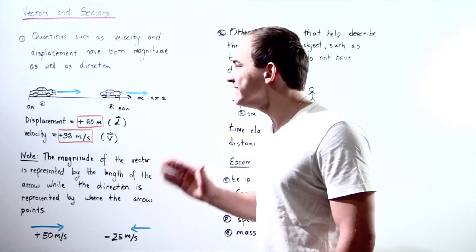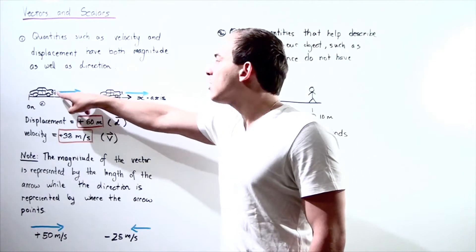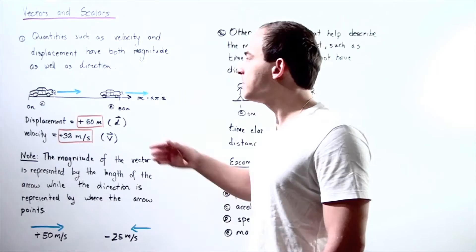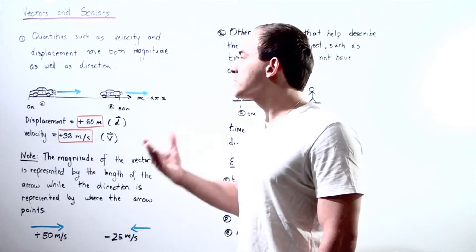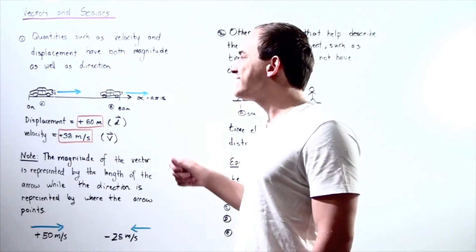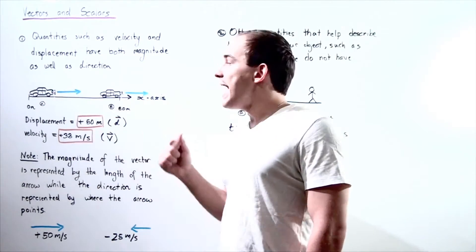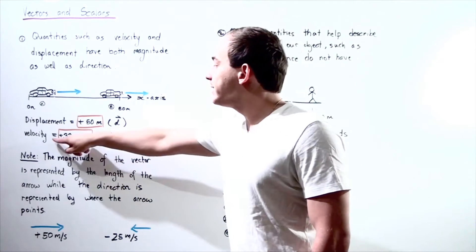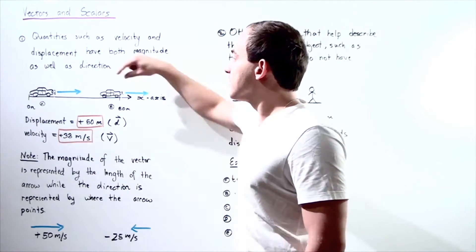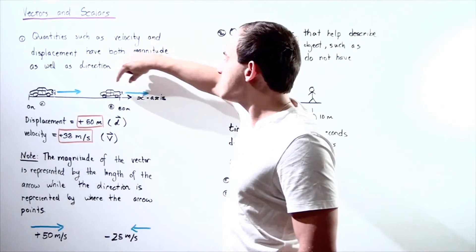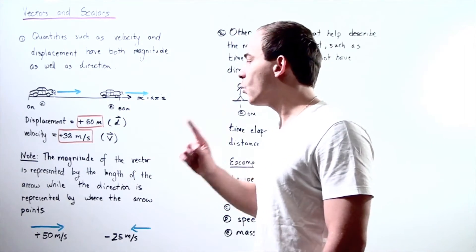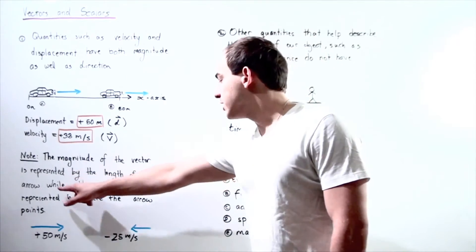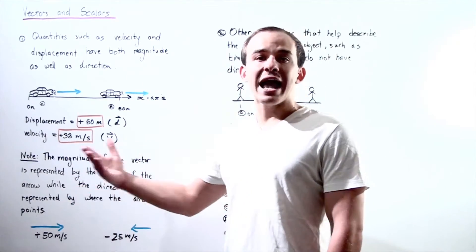Vectors are represented on the x-axis using arrows. The arrow represents what the vector is and in which direction it points. The direction is given by the direction of the arrow, and the magnitude is given by the length of the arrow. Because our velocity is constant, the length of the arrow is exactly the same at point A and point B.